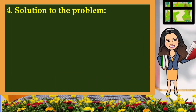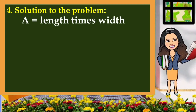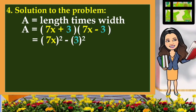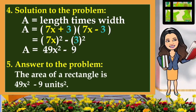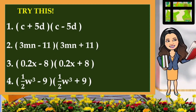The solution: since area equals length times width, and the length and width are the quantity 7x plus 3 and the quantity 7x minus 3, we multiply using our process — square the first term minus the square of the last term. The square of 7x is 49x squared, and the square of 3 is 9. So the area of the rectangle is 49x squared minus 9 square units.